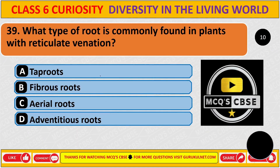What type of root is commonly found in plants with reticulate venation? The correct answer is A: taproot.